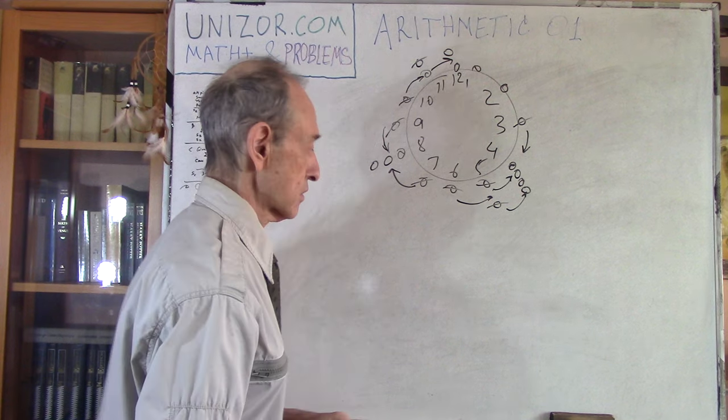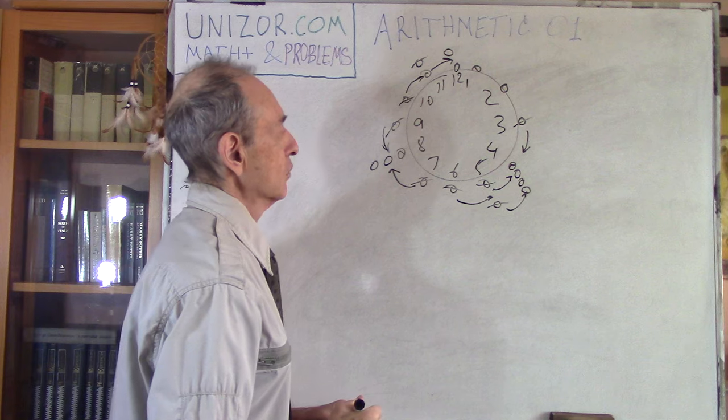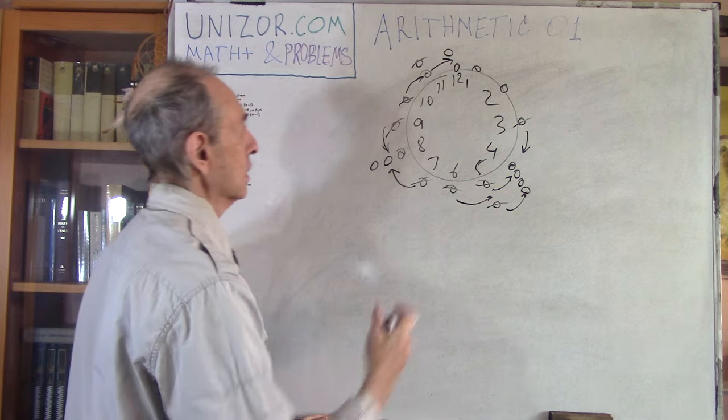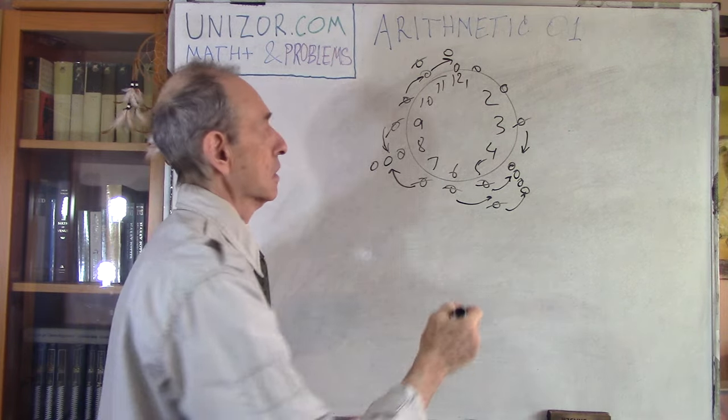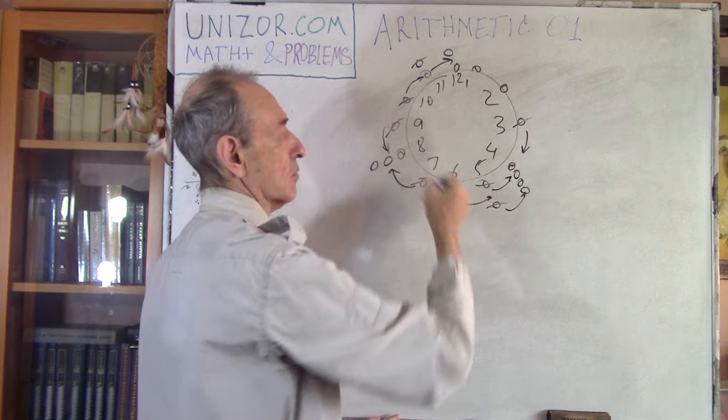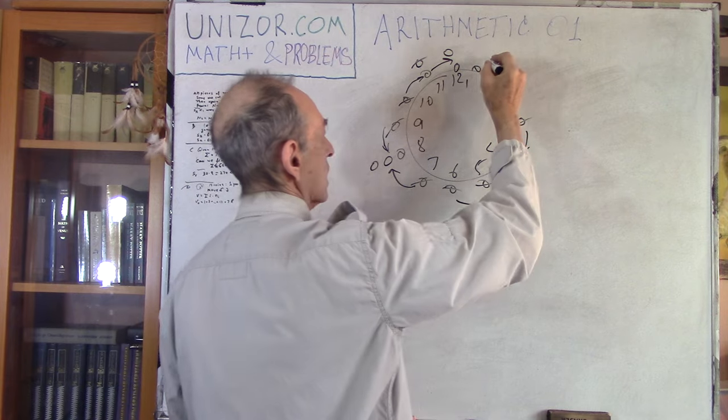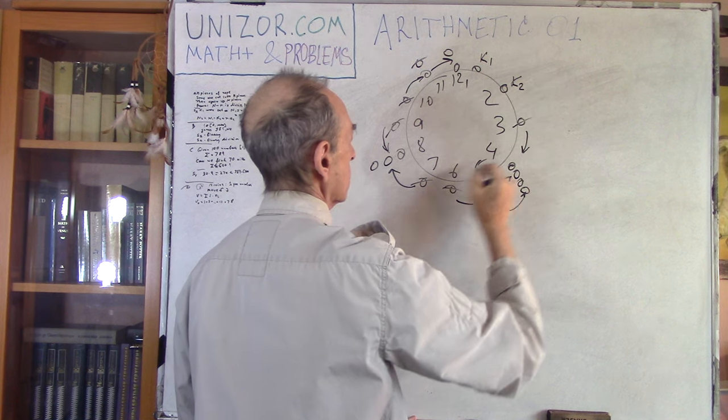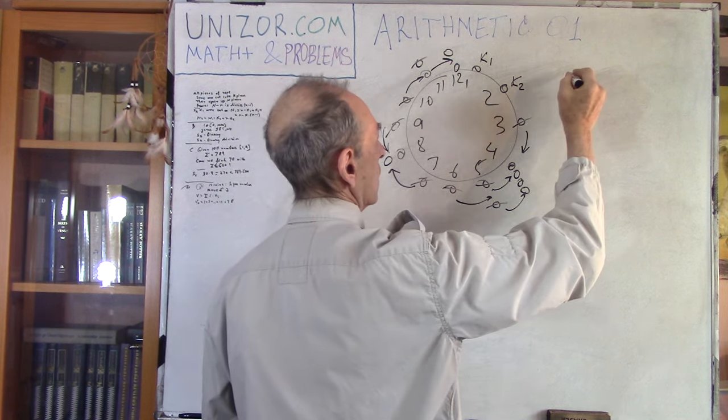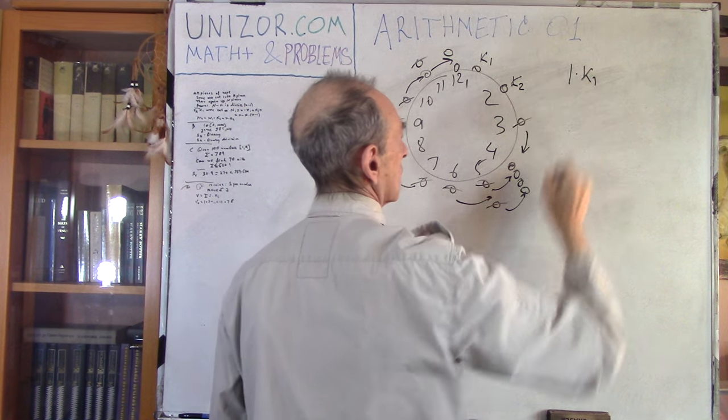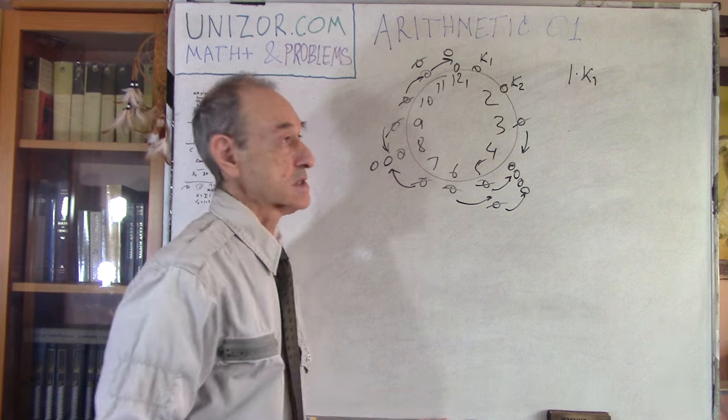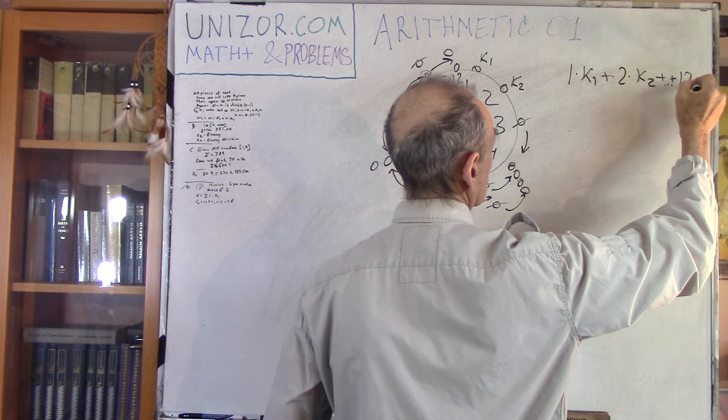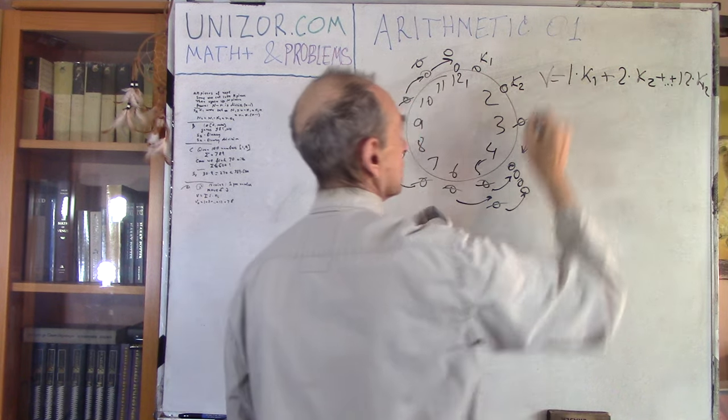Well, the answer is no. And here is the proof. What I will do is I will calculate something which I called the value of the position. Coins are in some position. There are a certain number of coins for each number. So, what I will do is, let's say, at number one, I have k1 coins. At number two, I have k2, etc. So, I will multiply the number itself by number of coins associated with this number. Plus two times k2, plus, etc., plus 12 times k12. I call it the value of the position.